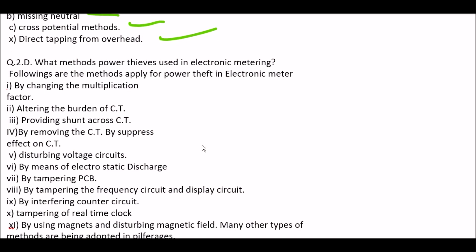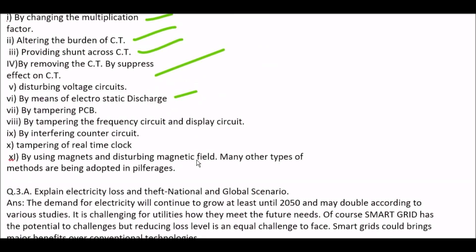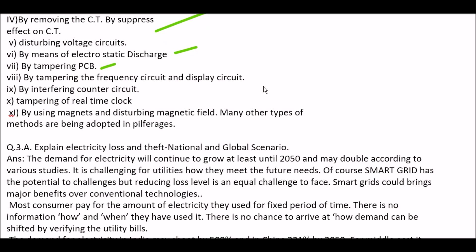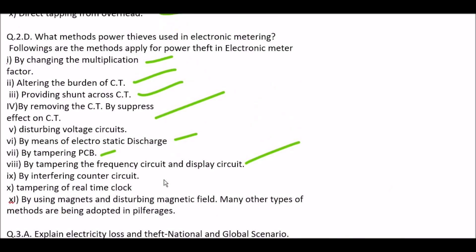Next question: what methods do power thieves use in electronic metering? Answer: the following methods are applied for power theft in electronic meters — by changing the multiplication factor; altering the burden of CT; providing a shunt across CT; by removing the CT or suppressing its effect; disturbing voltage circuits; by means of electrostatic discharge; tampering the PCB; tampering the frequency circuit and display circuit; interfering with the count circuit; tampering of the real-time clock; and by using magnets and disturbing the magnetic field. Many other types of methods are being adapted in pilferage.